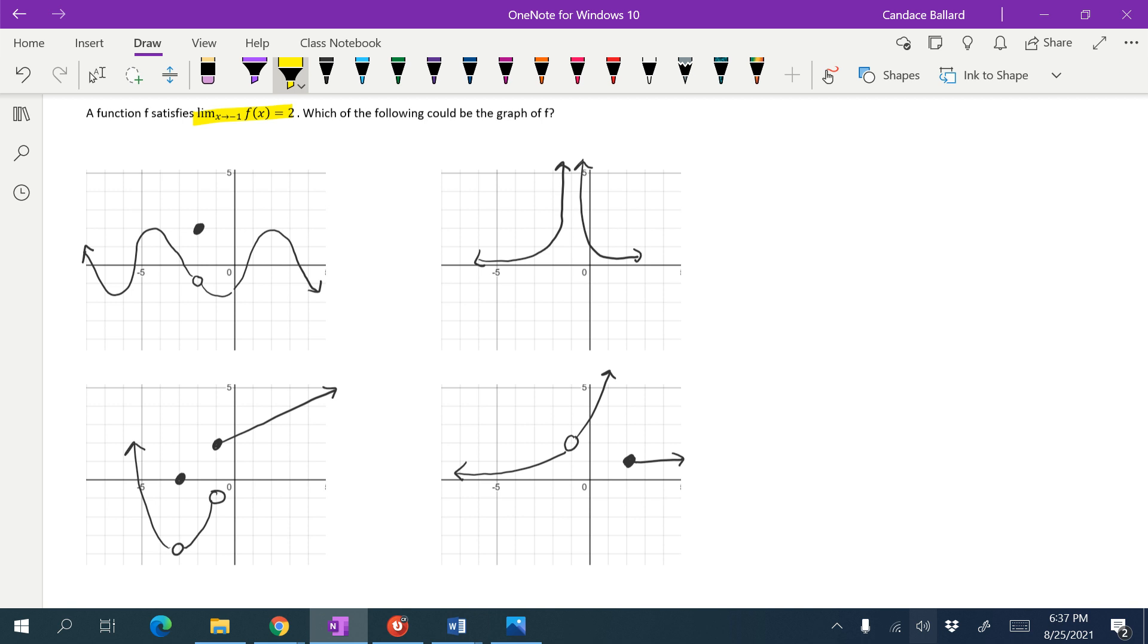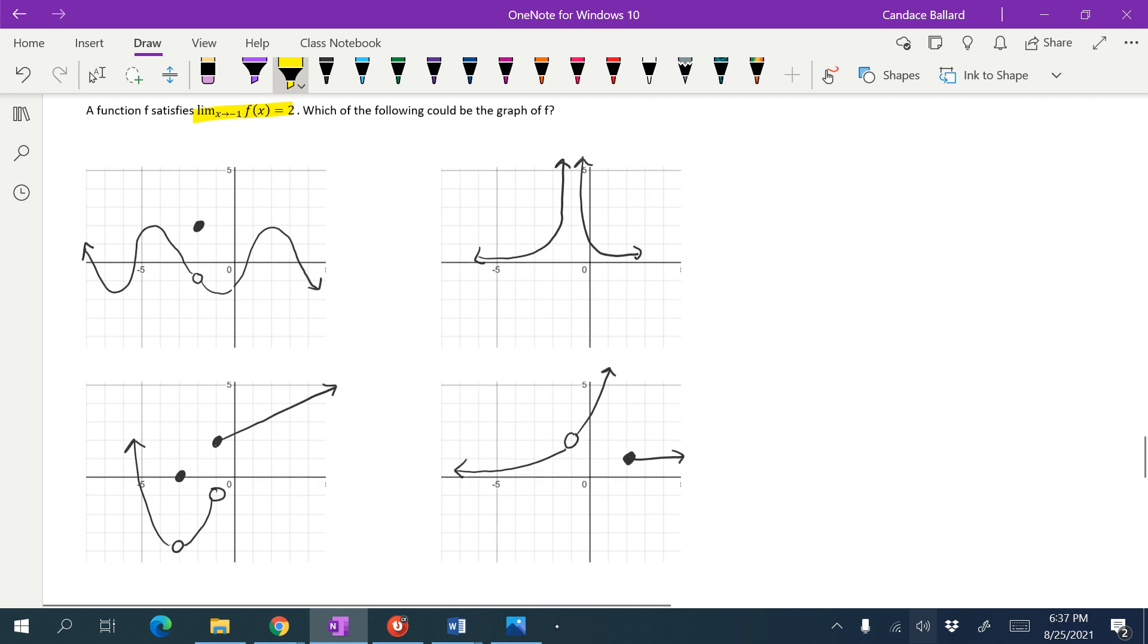So I'm going to start by highlighting where negative 1 is here. Let's see. x is approaching negative 1, so that's the negative 1 on that one. That's the negative 1 there. This is the negative 1 here, and this is the negative 1 here.